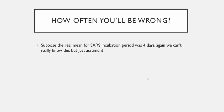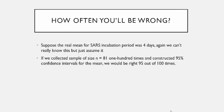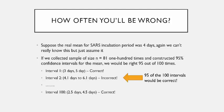Suppose the real mean SARS incubation period was four days. What this means is: if we wanted to construct 95% confidence intervals and we collected samples of size n = 81 one hundred times — 100 different samples — and constructed a 95% confidence interval for the mean each time, we would be right 95 out of 100 times. For example, the first interval might say I'm 95% confident the mean is between three days and five days — the actual mean is four, which falls in there, so that interval is correct.